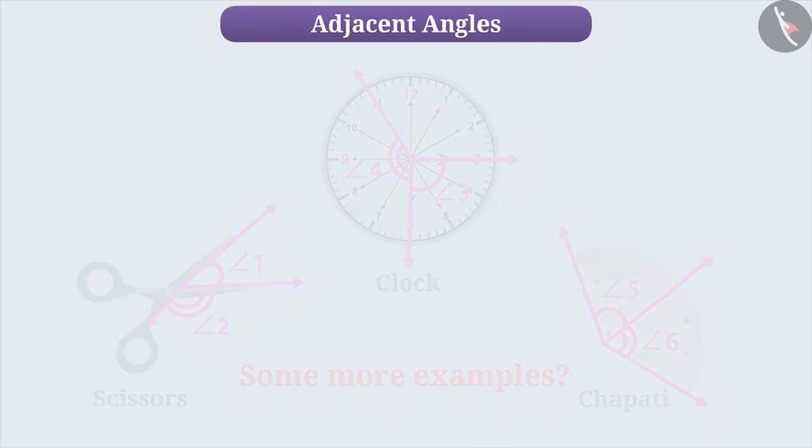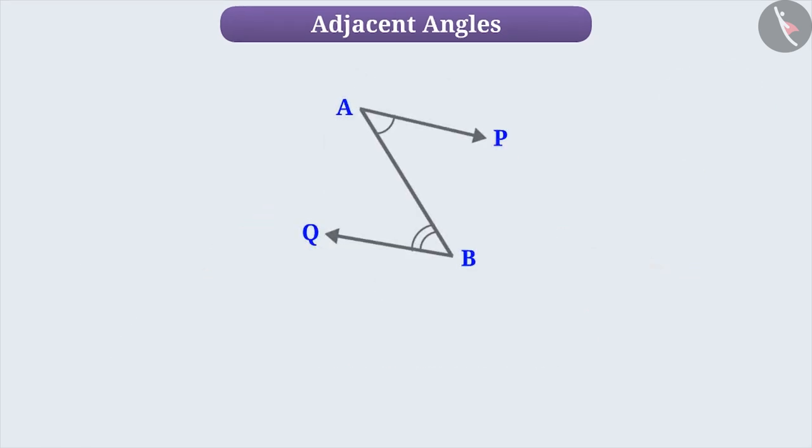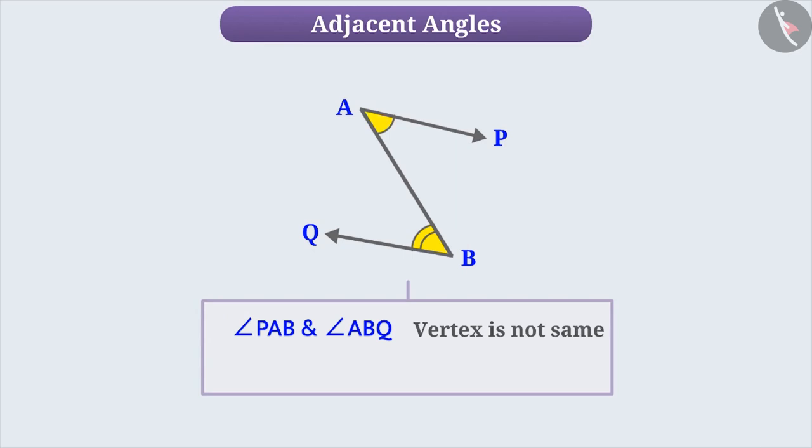Now, look at this figure. Do you think the angles shown here are Adjacent Angles? Think for a while. Let me tell you. The vertex of both angles is not the same. The vertex of one angle is A while the vertex of the other angle is B. Therefore, the angles shown in this figure are not Adjacent Angles.